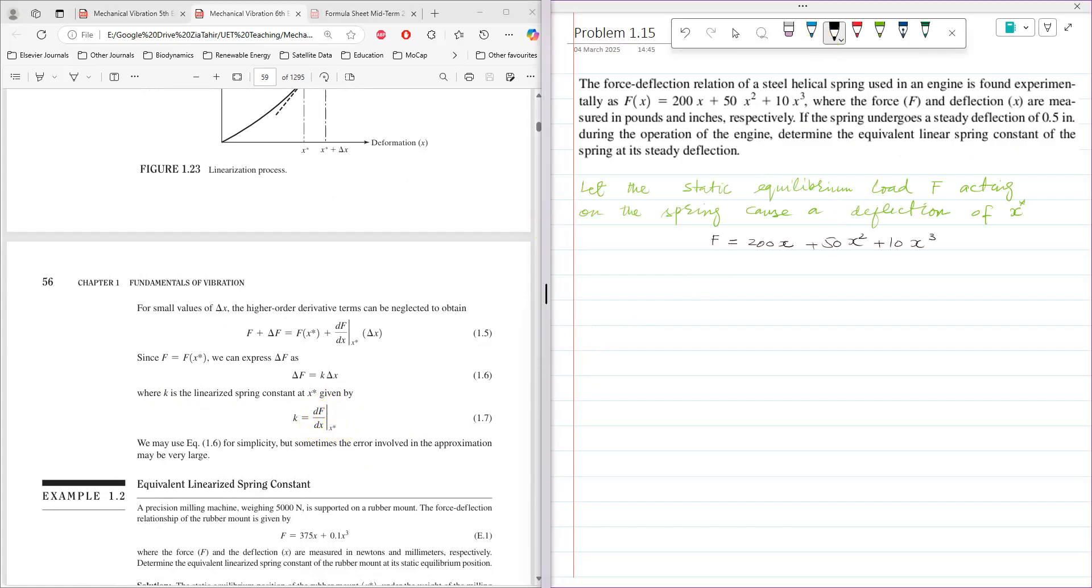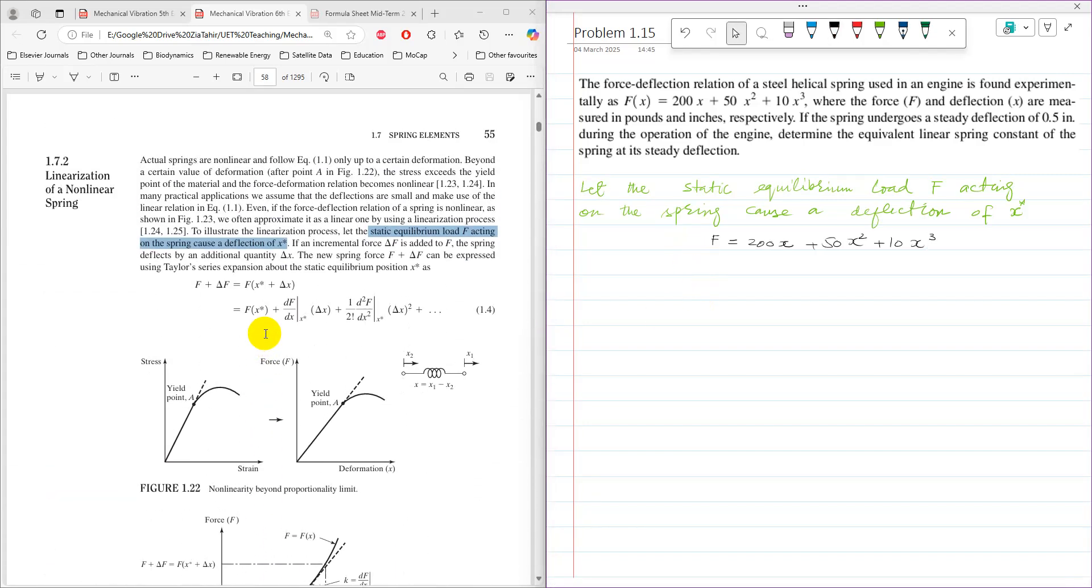Let the static equilibrium load acting on the spring cause a deflection of x*. Then that force is 200x* + 50x*² + 10x*³. In this problem, the steady state deflection x* is given as 0.5 inches.